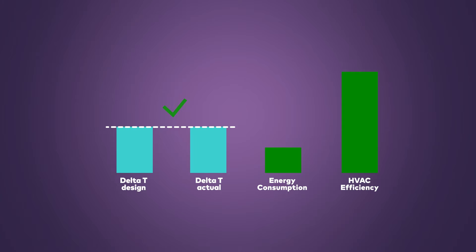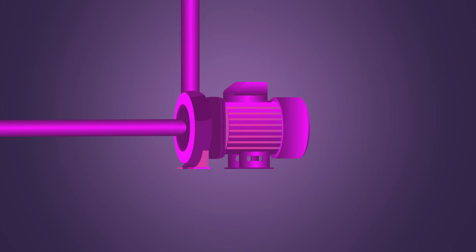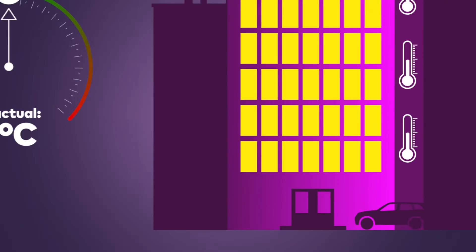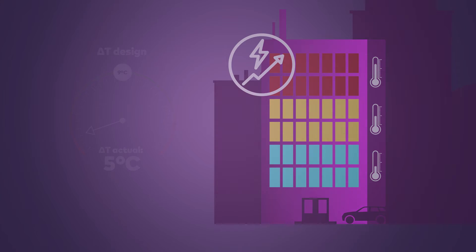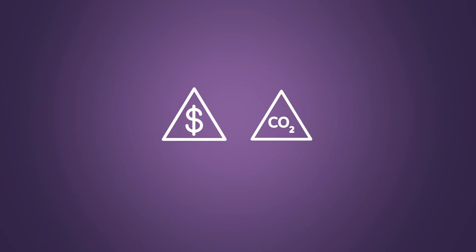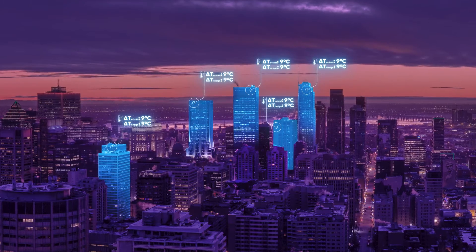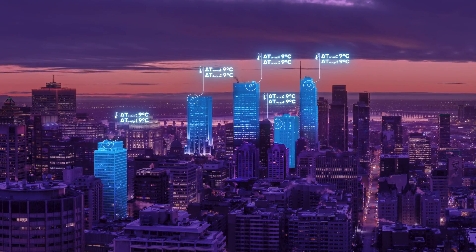When Delta-T is consistently lower than expected, we call it Low-Delta-T Syndrome. Some common causes of Low-Delta-T are oversized equipment and incorrect hydronic balancing. A system suffering from Low-Delta-T Syndrome requires more energy to achieve the desired temperature levels, leading to increased energy bills and a higher carbon footprint. This is detrimental for any building type, but particularly for district cooling applications.